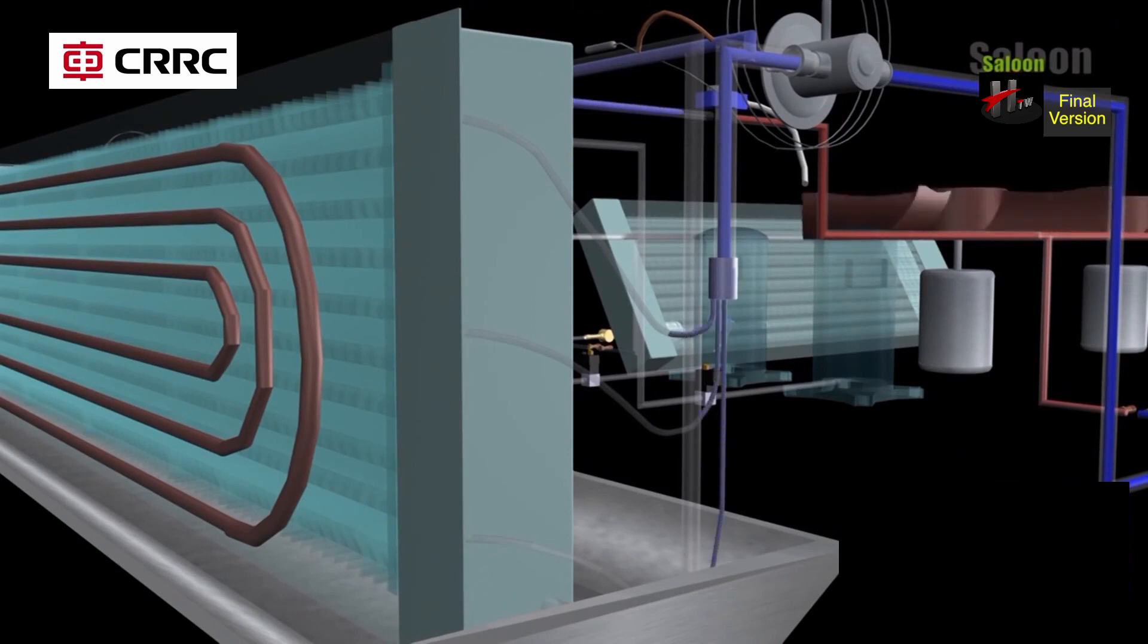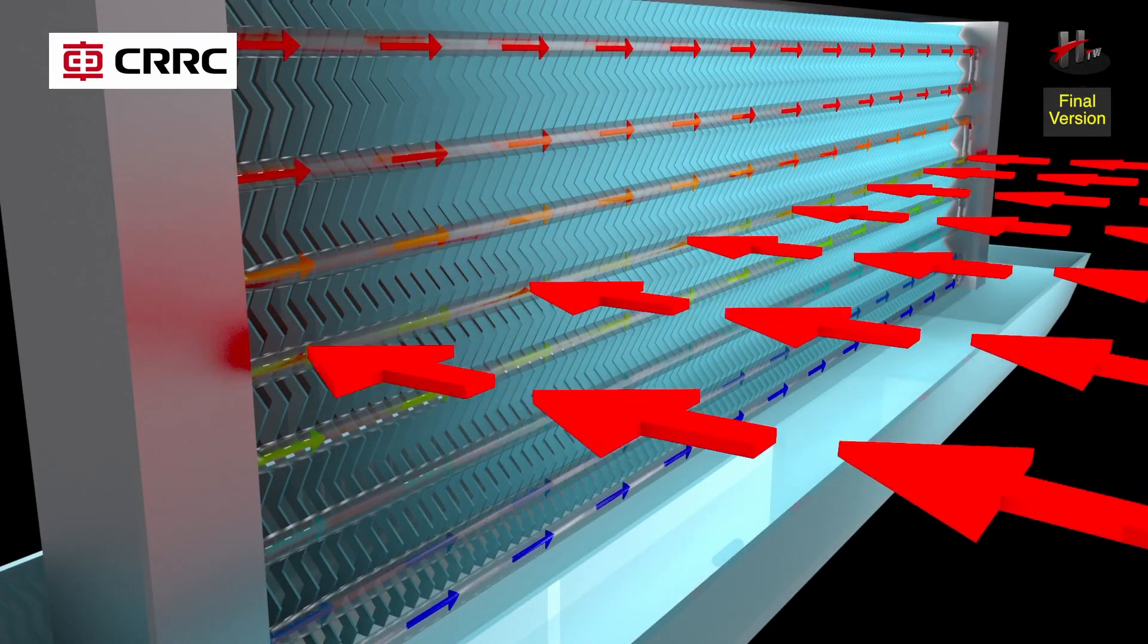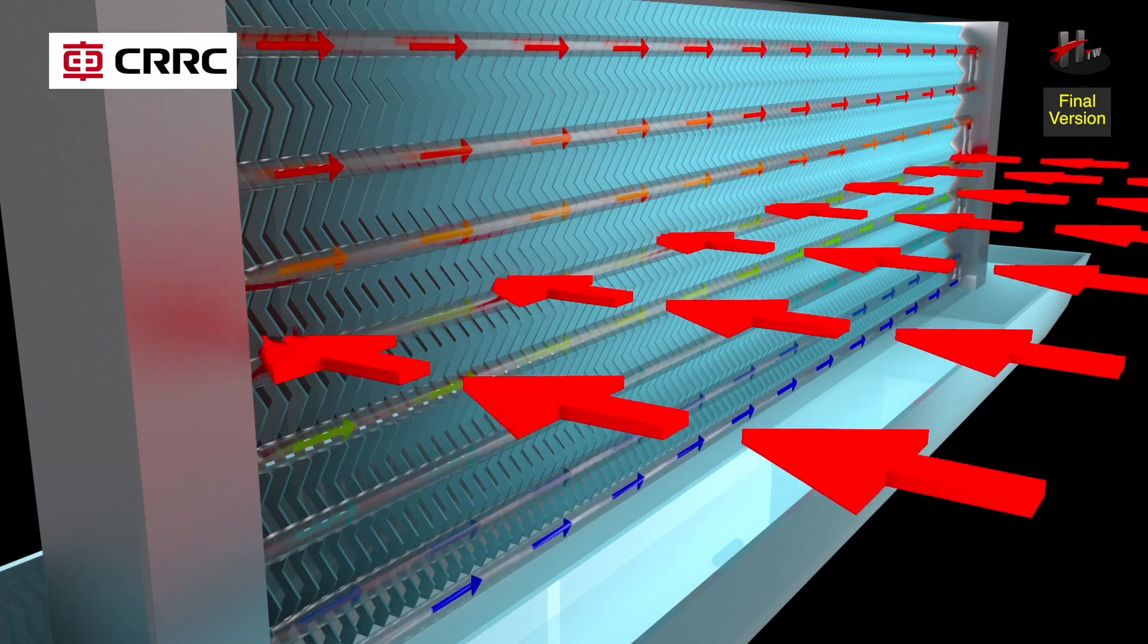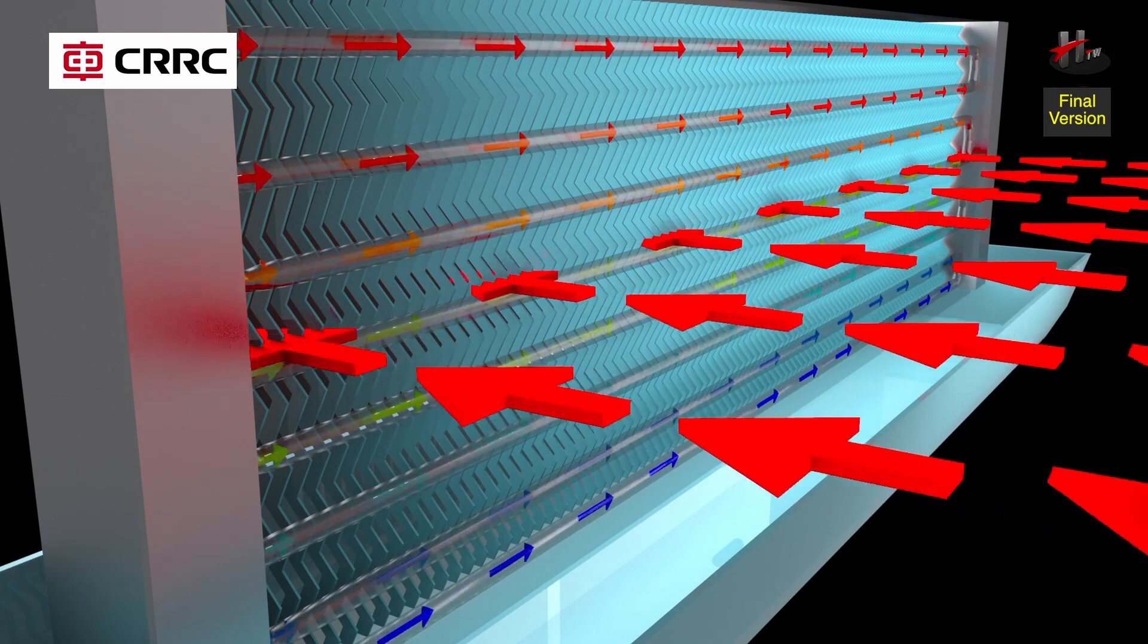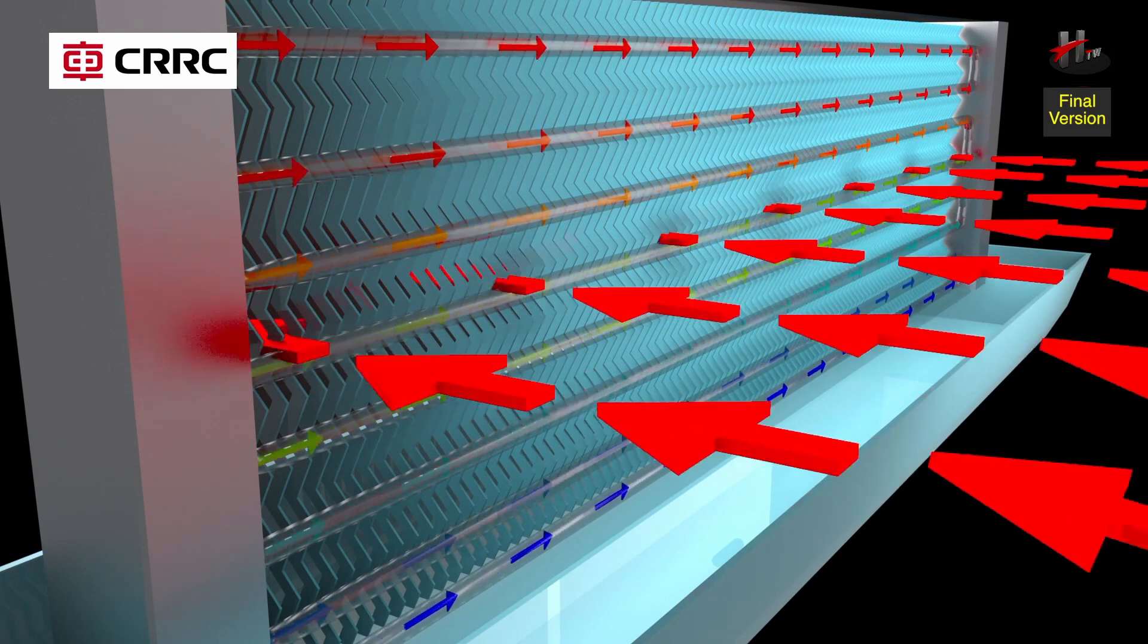This mix of cold liquid and vapor refrigerant goes into the evaporator or the cooling coil. The evaporation of the refrigerant in the cooling coil causes the mixed air to cool down before it is discharged into the supply air duct.